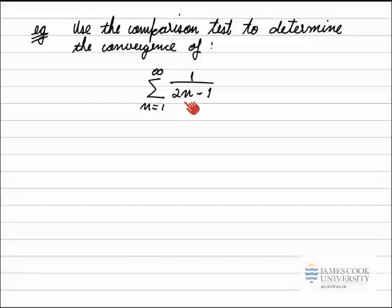So I want to find a series which is smaller than this one that also diverges. So we'll see what we can do with that. Just start by looking at the terms here to the right of the summation sign, the 1 over 2n minus 1. I'm just going to look at the denominator, which is 2n minus 1.